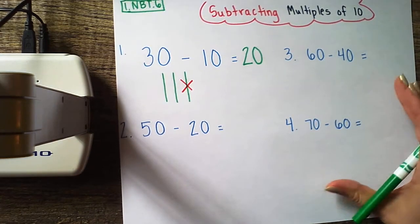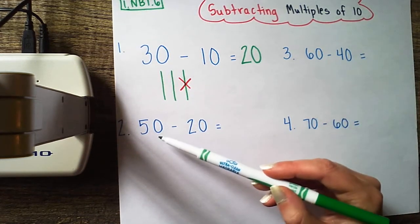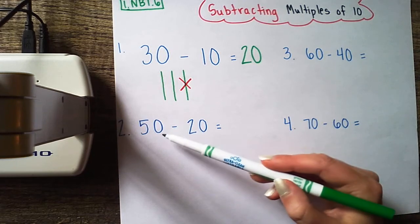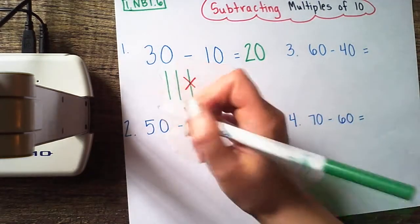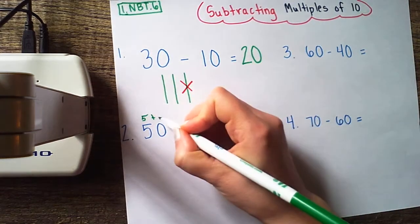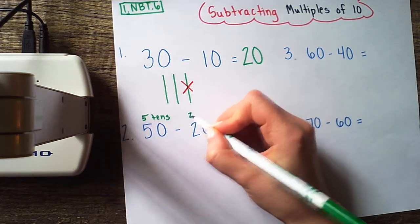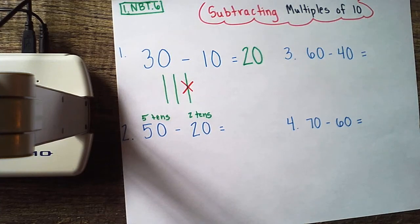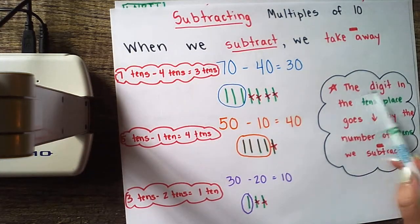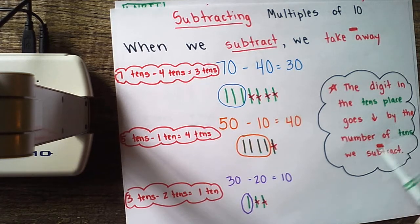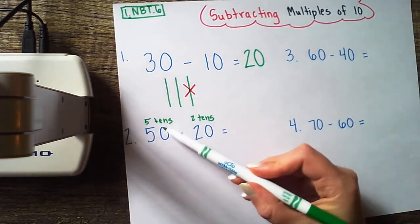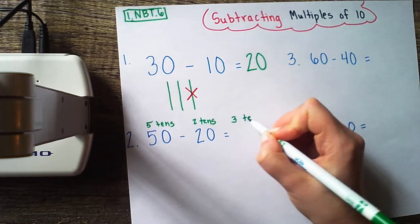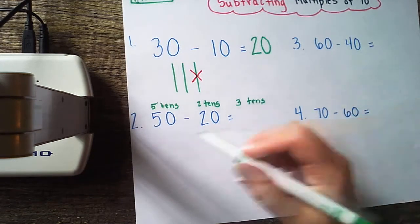Let's take a look at number 2. I'm going to do this one and then you can help me with 3 and 4. I'm starting with 50 and subtracting 20. I know that 50 is the same as 5 tens, and I'm subtracting 20, which is the same as 2 tens. The hint is that the digit in the tens place goes down by the number of tens we subtract. If I start with 5 tens and take 2 tens away, I should be left with 3 tens because 5 minus 2 is 3. Let's try it.